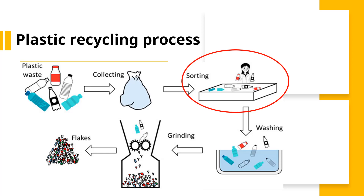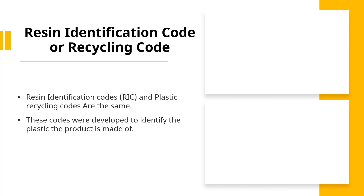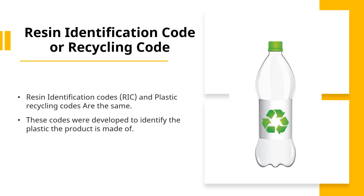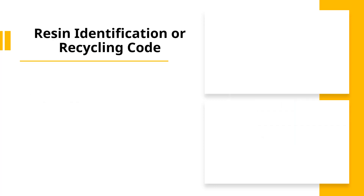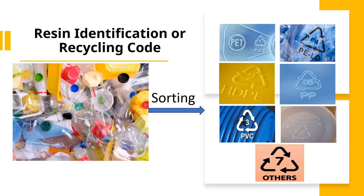To simplify this problem, the resin identification code was developed. The resin identification code is a set of symbols that appears on most plastic products, mostly at the bottom inside a three-arrow triangle symbol. Resin identification codes are also known as plastic recycling codes. These codes were developed so that we can understand which product is made of what type of plastic and we can sort them without mixing them, because not every polymer is the same. Every polymer has different properties and therefore they are used in different applications.